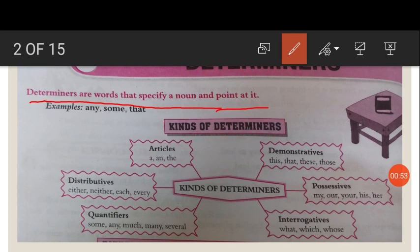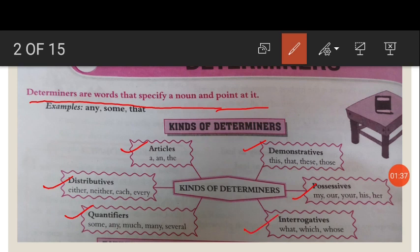Now let us see the kinds of determiners. First are articles: a, an, and the. Next are demonstratives: this, that, these, and those. Then distributives: either, neither, each, every. Then possessives: my, our, your, his, her, etc. Quantifiers: some, any, much, several. And interrogatives: what, which, whose, how much, etc. So these are the different kinds of determiners.